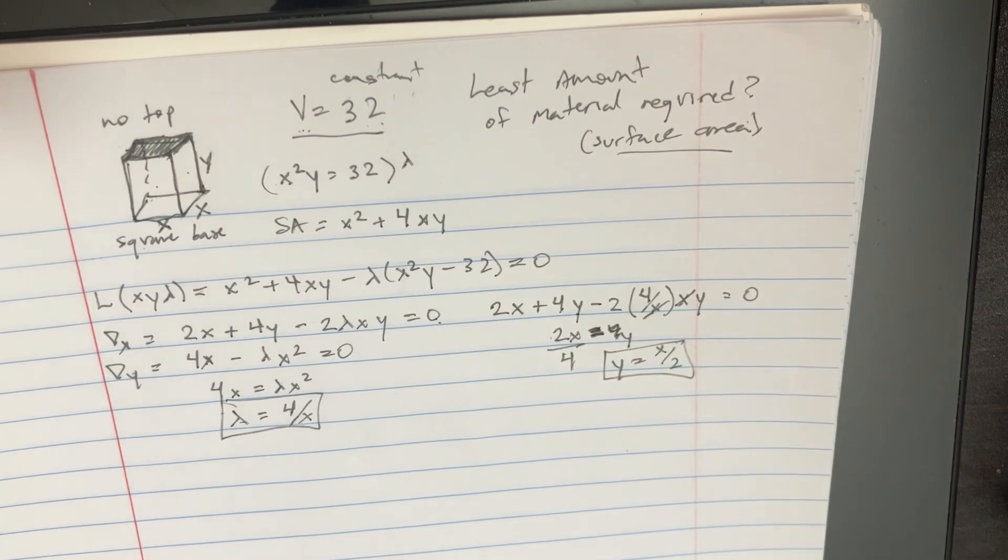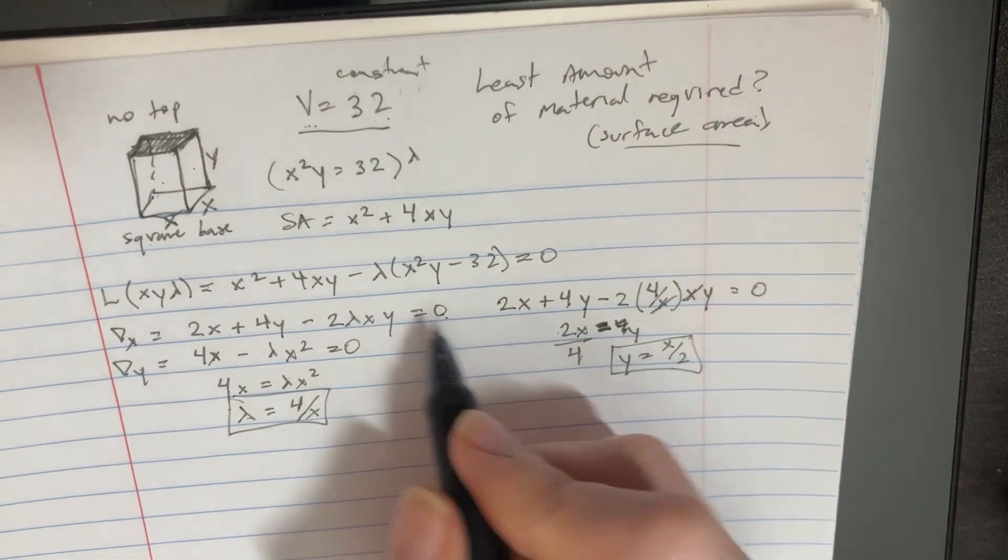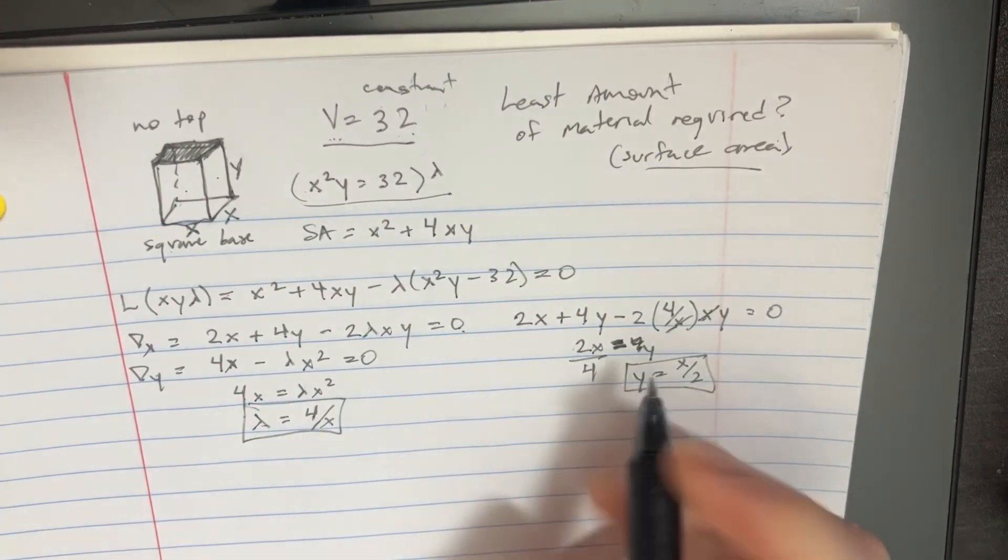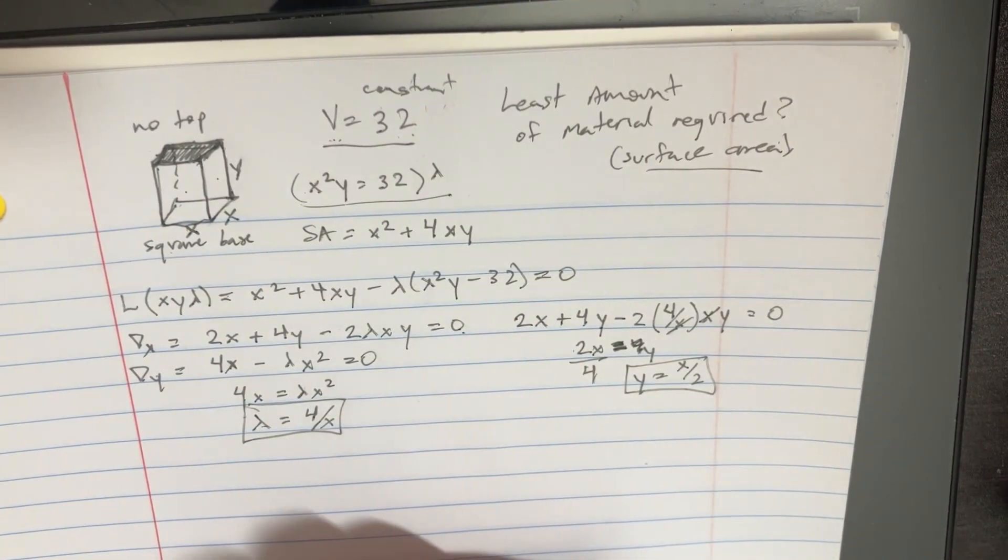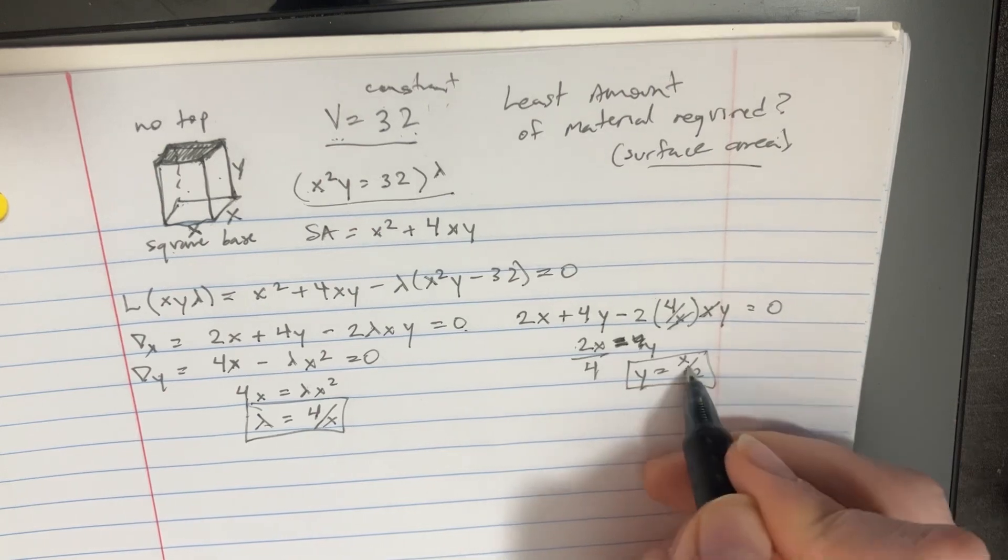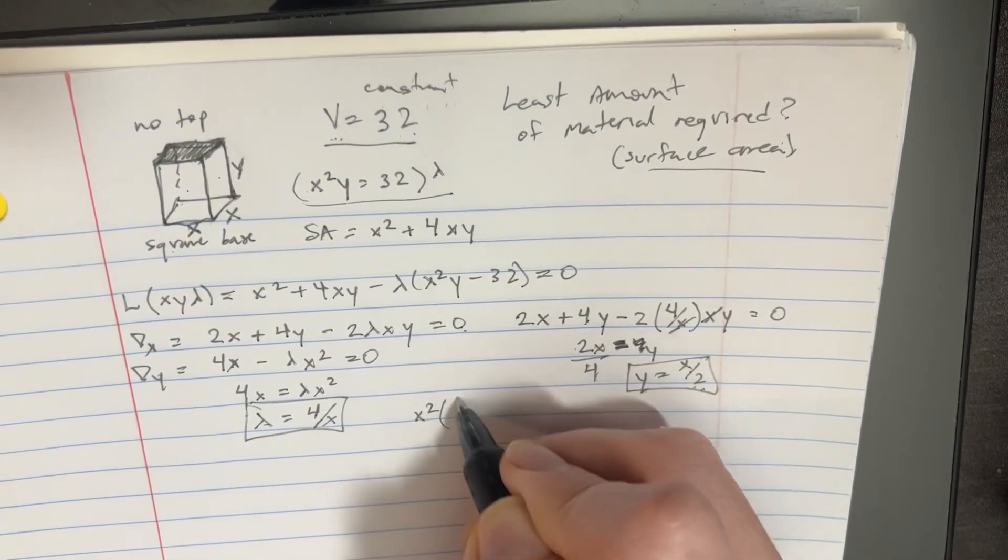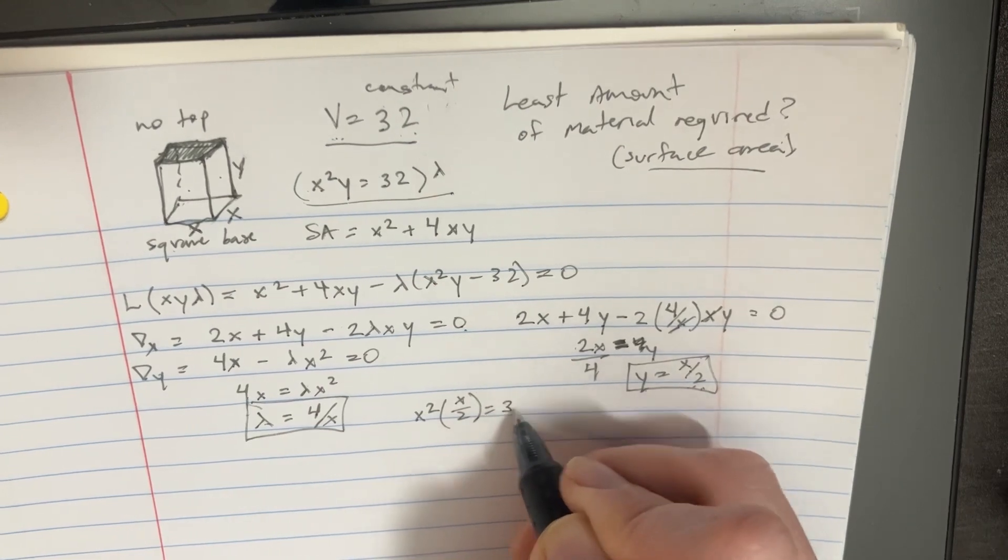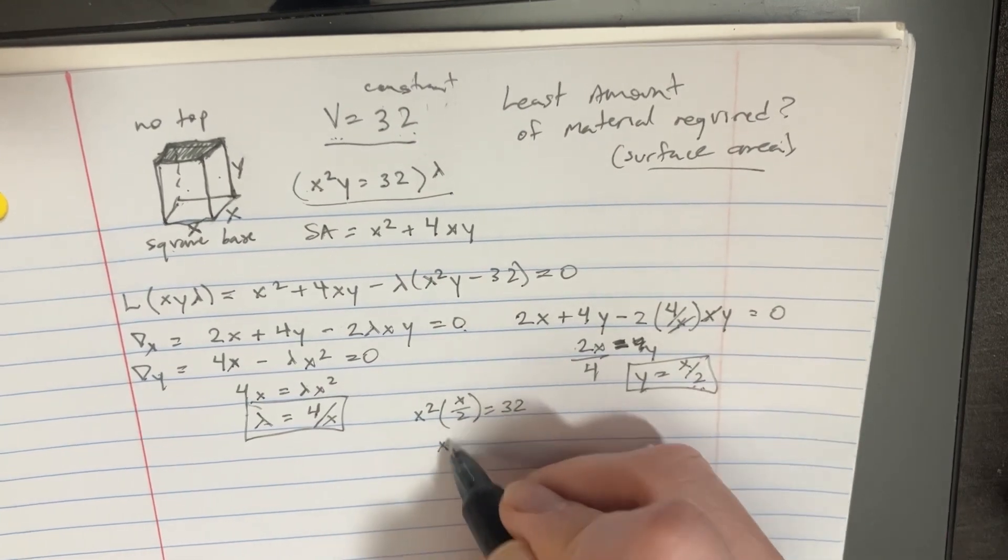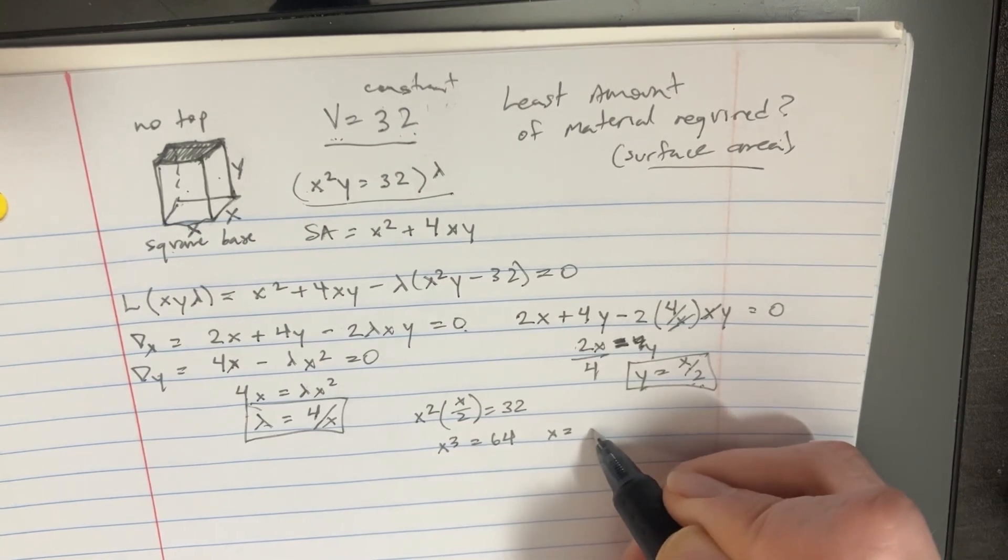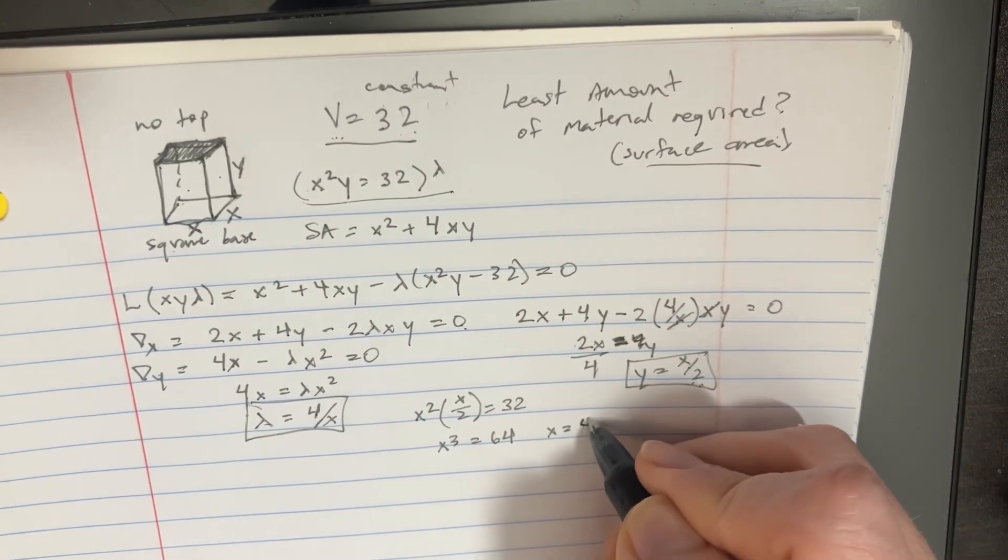Now we can plug that stuff back into this equation. So we'll say that because y equals x over 2, x squared times x over 2 equals 32. Multiply 2 over there and we'll get x cubed equals 64, so x is supposed to be equal to 4.